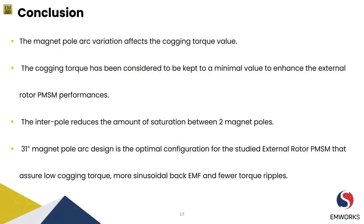In conclusion, our analysis of the external rotor PMSM has shown that the magnet pole arc design plays a crucial role in determining the machine's performance. By reducing the volume of the magnet by 30%, we achieved a significant reduction in cogging torque. The inter-pole design also helped reduce saturation between the two magnet poles, further improving performance. Our simulation has shown that the 31-degree magnet pole arc design is the optimal configuration for the studied external rotor PMSM, resulting in low cogging torque, more sinusoidal back EMF, and fewer torque ripples, contributing to less noise and vibration — making it ideal for a variety of industrial and commercial applications.